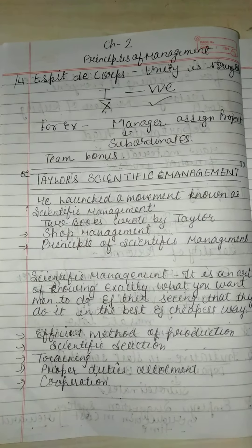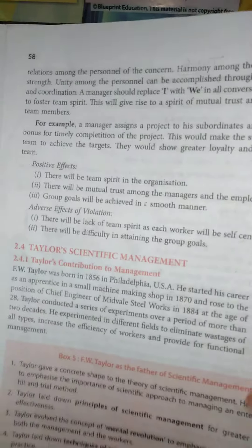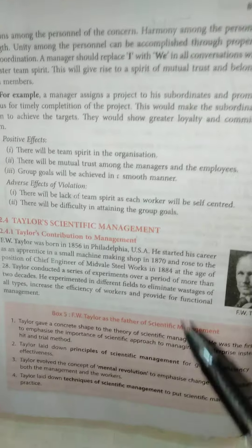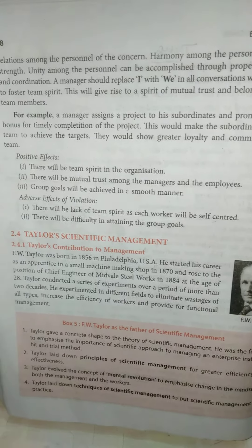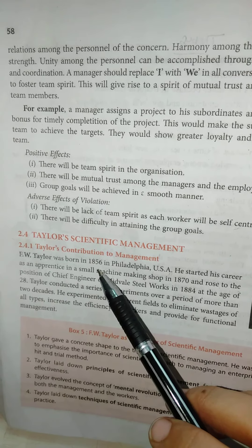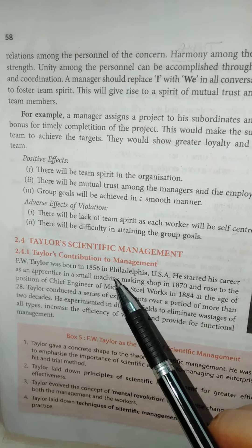Henry Fayol gave general principles; Taylor gave scientific management principles. Taylor conducted some experiments on whose basis he set up certain principles. F.W. Taylor was born in 1856 in Philadelphia, USA. He started his career as an apprentice — a learner — in a small machine-making shop in 1870, and then rose to the position of Chief Engineer of Midvale Steelworks in 1884, when he was just 28 years old.